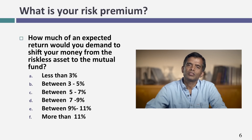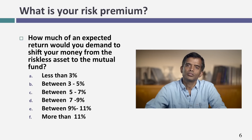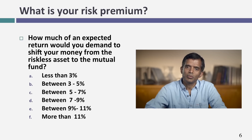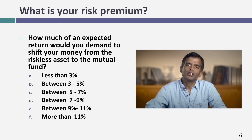There's no right answer here — there's actually one wrong answer that hopefully none of you will pick, but it really depends on how risk-averse you are. The first choice is less than 3%. Nobody should pick it because if you can make 3% guaranteed, you should never settle for less than 3% on a risky investment. The next choice is 3% to 5% — a risk premium between 0% and 2%. If you pick that, you're among the least risk-averse people, and you'll be more invested in risky assets and quicker into stocks throughout your life.